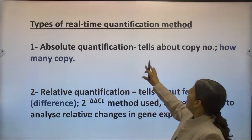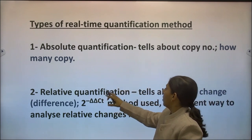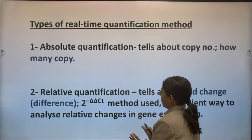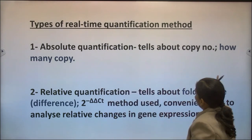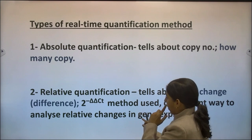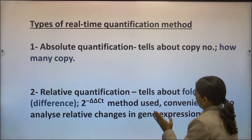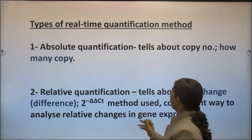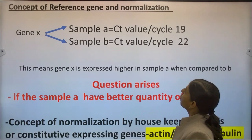There are two types of real-time quantification methods: absolute quantification and relative quantification. Relative quantification is most widely used and is done using the delta-delta CT method, also known as the Livak method. It describes the fold change difference between two samples. Absolute quantification tells us about the copy number, relating the PCR signal to a standard curve.